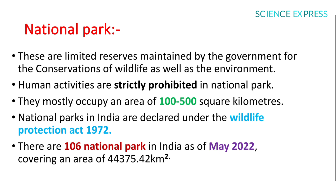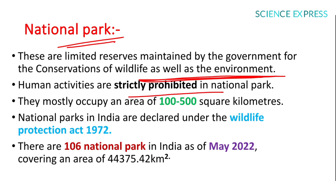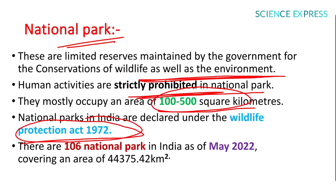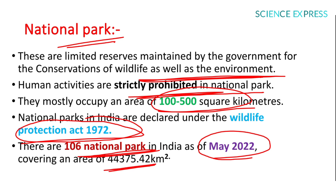National Parks are limited reserves maintained by the government for conservation of wildlife and the environment. Human activities are strictly prohibited in national parks. They mostly occupy an area of 100 to 500 square kilometers. National Parks are declared under the Wildlife Protection Act 1972. In India, as of May 2022, 106 national parks are present, covering 44,375.42 square kilometers.